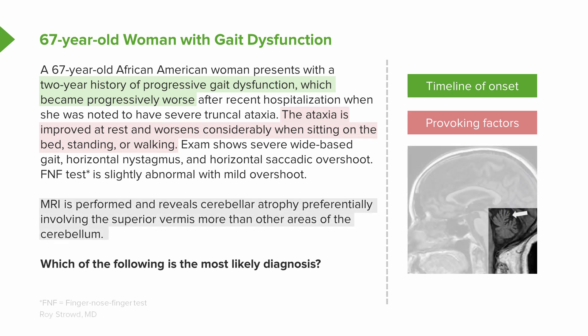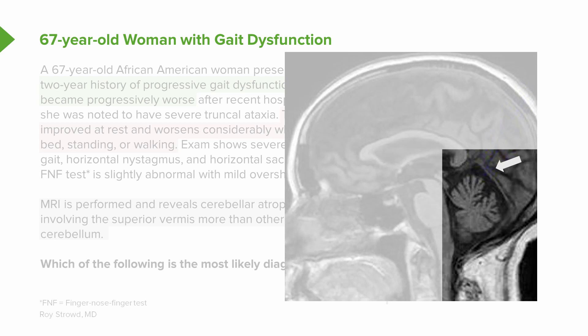This patient's exam shows problems with cerebellar dysfunction: wide-base gait, nystagmus, saccadic overshoot, and difficulty with finger-nose-finger are all cerebellar signs. That means this dizziness problem is a problem with the cerebellum and disequilibrium. Let's look more closely at this patient's MRI scan.